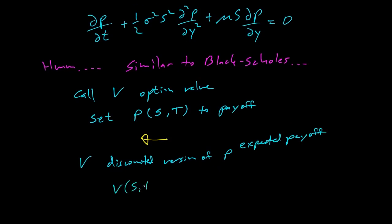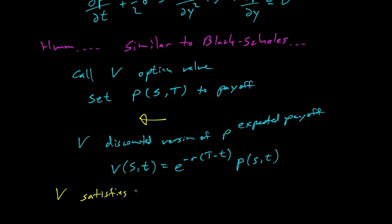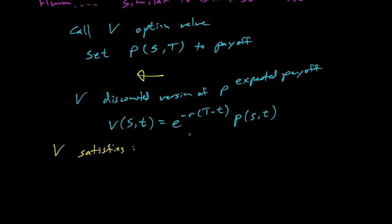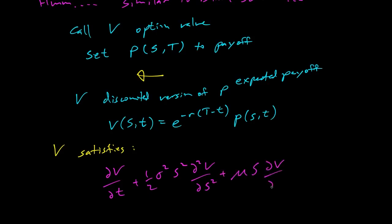How do we use this to value an option? Let V be our option value. We set p(S, T) to our payoff — working backwards, we set the initial condition for p at the end. V will be the discounted version of p, so the expected payoff discounted to the present: V(S,t) = e^{-r(T-t)} · p(S,t). Solving the differential equation and accounting for discounting gives us an extra term, yielding: ∂V/∂t + ½σ²S² ∂²V/∂S² + μS ∂V/∂S − rV = 0.